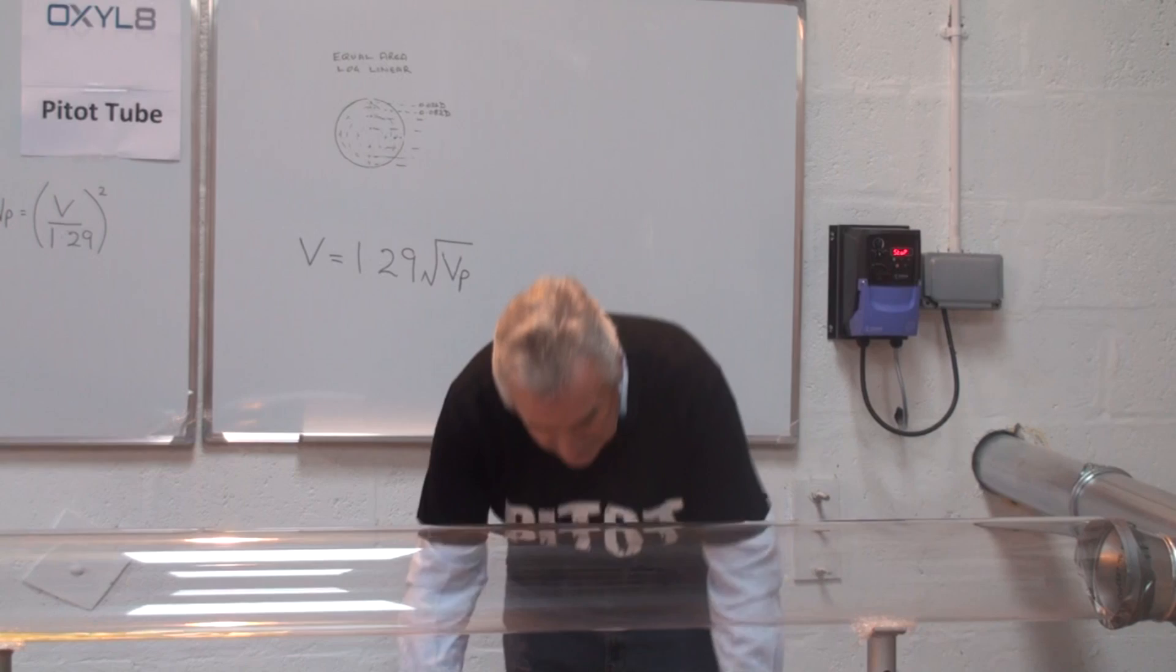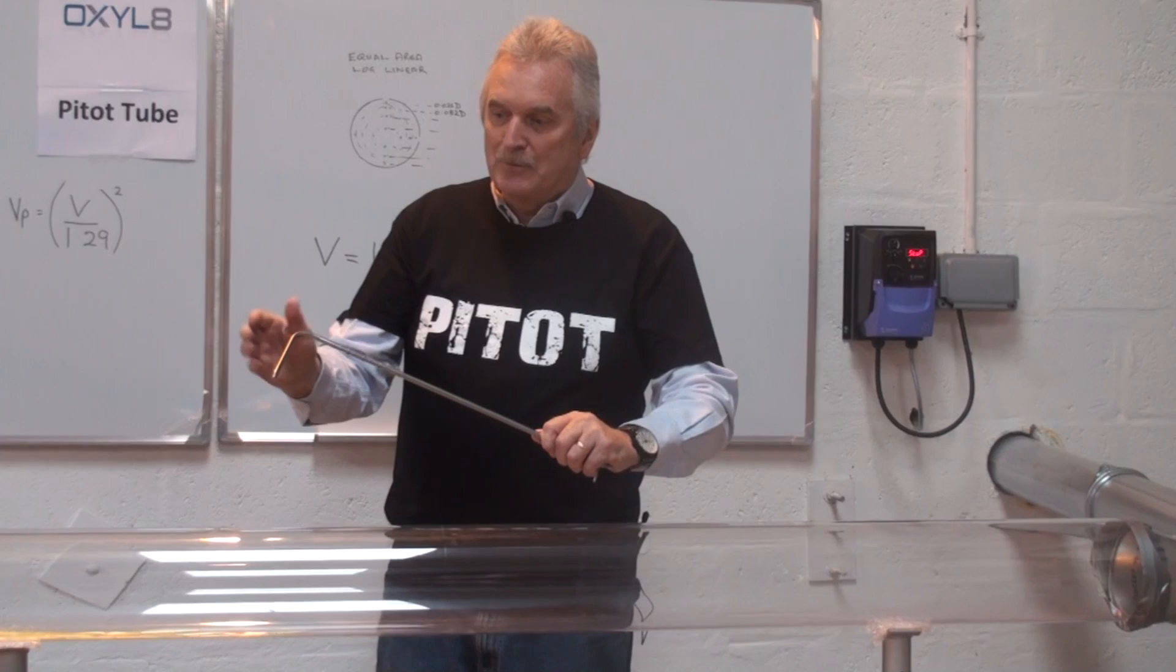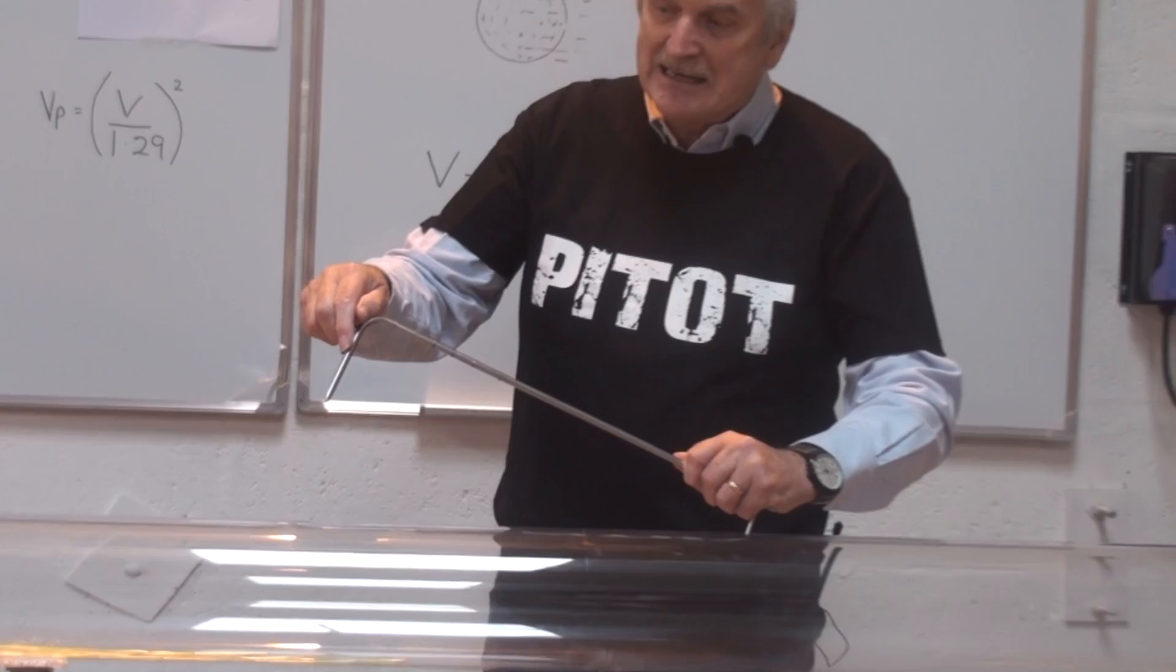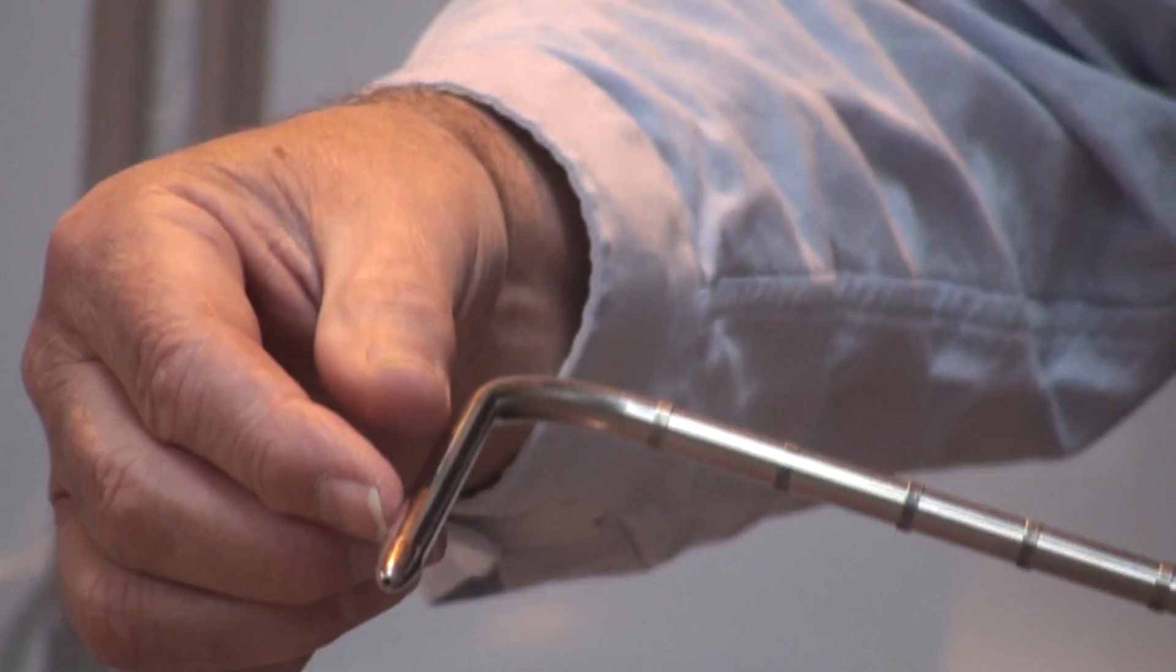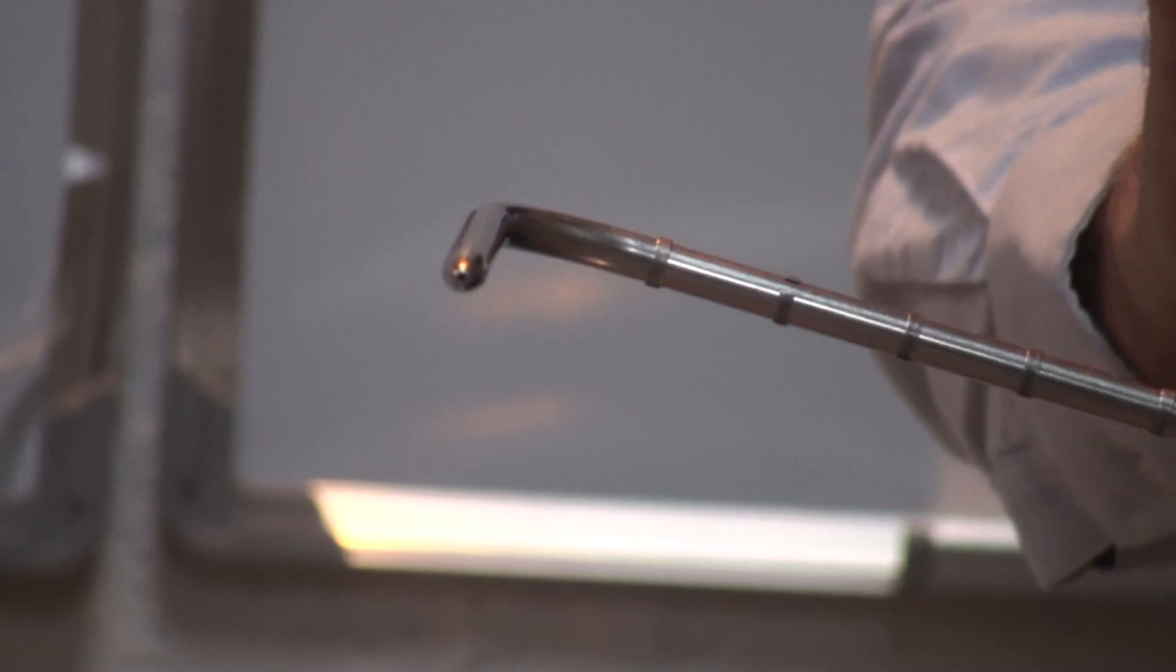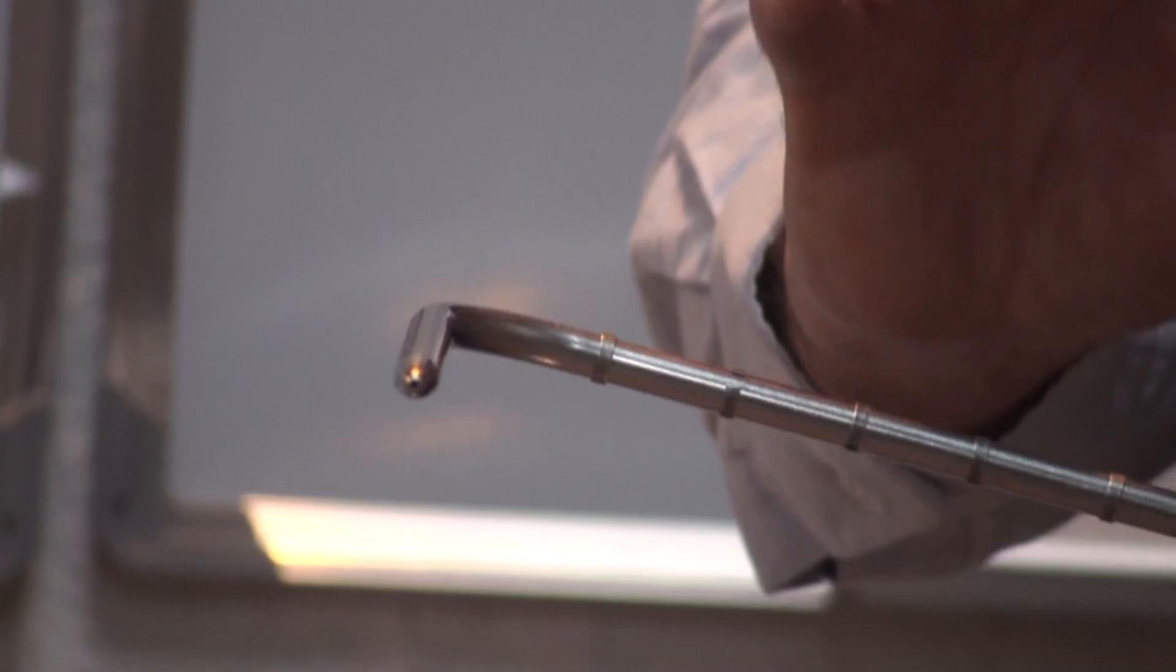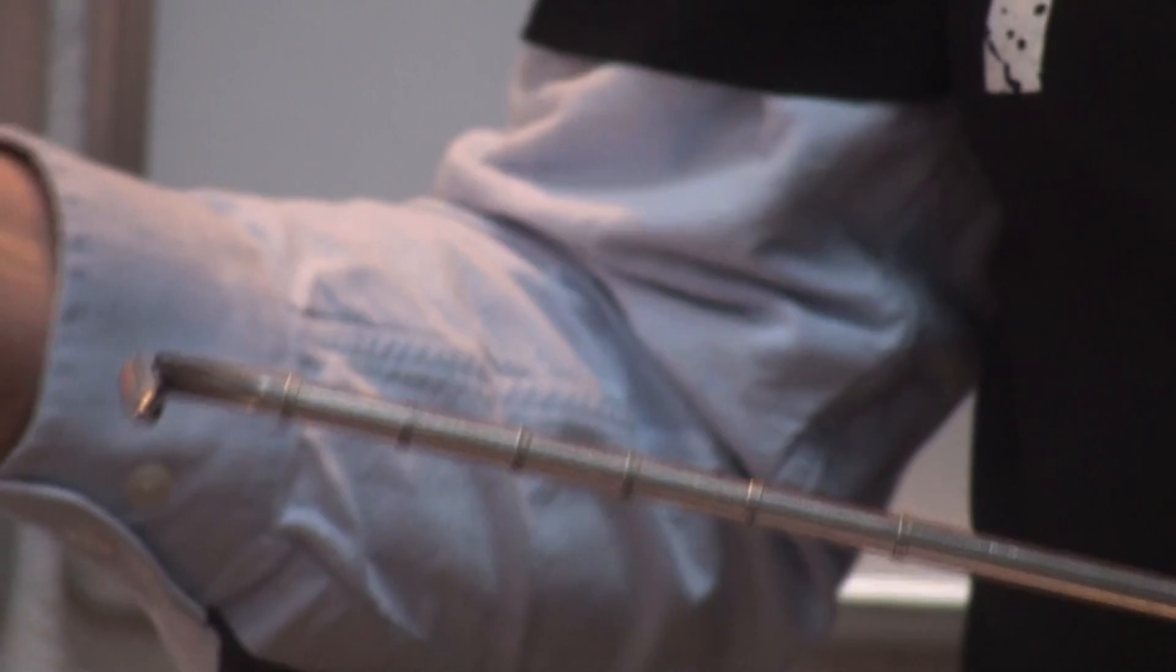If we were to look at the pitot itself and we were to look at it in detail, right down here we have a series of peripheral holes around the edge. Now these as we will see pick up the static pressure. Right on the end on the nose there is a hole. Now it is such a common misconception that that picks up the static pressure. Maybe if we look at the drawing I have on the board we will see why that is incorrect.